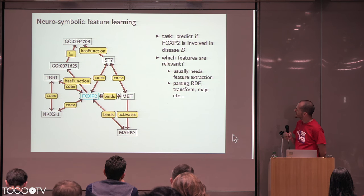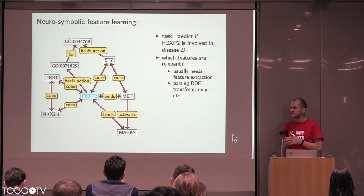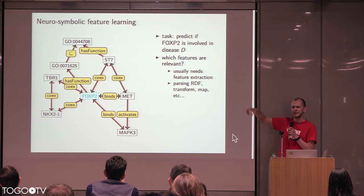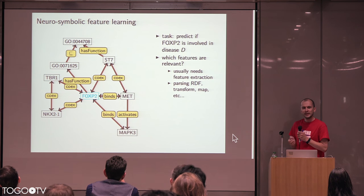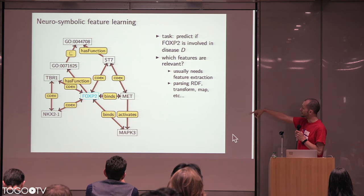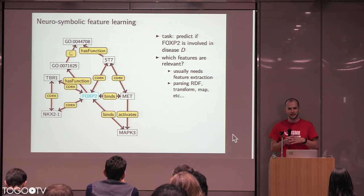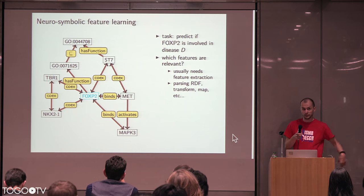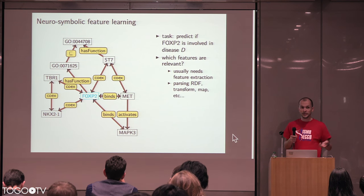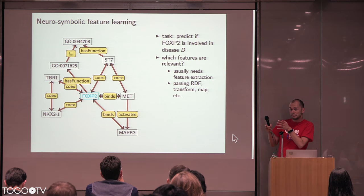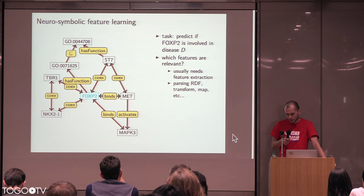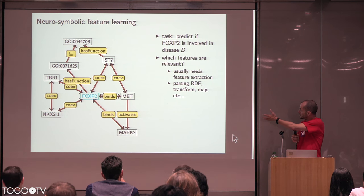We might decide that functions are somehow relevant, so let's encode functions. But we need to find a special way to encode them because there is a subclass relation we have to account for. So we write a script, parse the RDF graph, transform it, identify exactly what we need, and represent the features in a particular way. Whatever model we use may need a different representation. Then we have to do some mapping — that's all very tedious and exactly what we do not want to do, but it is what we would have to do if we want to use this for machine learning.